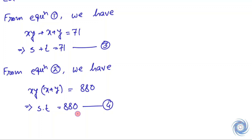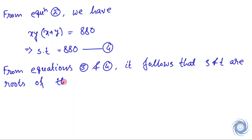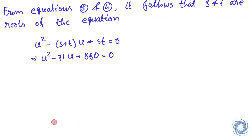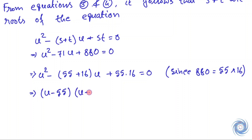Therefore we can construct a quadratic equation whose roots are s and t. So s and t are the roots of the equation u² - 71u + 880 = 0. Solving this, we get u = 55 or u = 16.